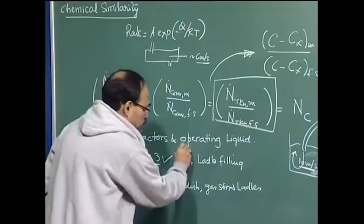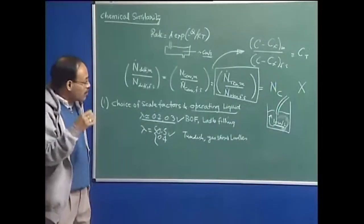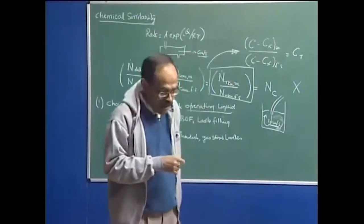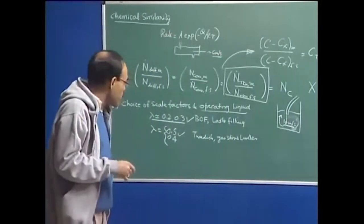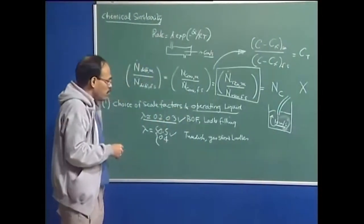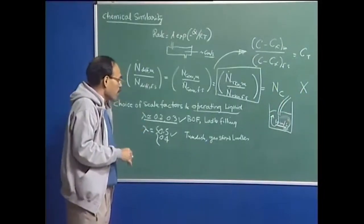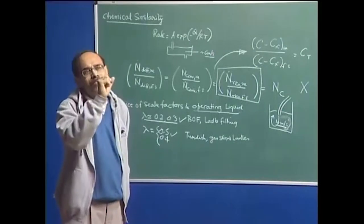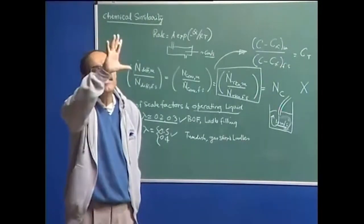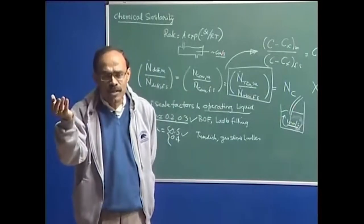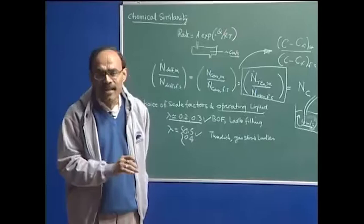Regarding operating liquid: in reduced scale models we are going to use most of the time water as the representative fluid because of certain conveniences. Having decided to use water, we understand that we can only respect the Froude number and not the Reynolds number because of similarities in kinematic viscosity. If we assert that steel making systems are dominated by inertial and gravitational forces, then steel making systems are essentially Froude dominated.